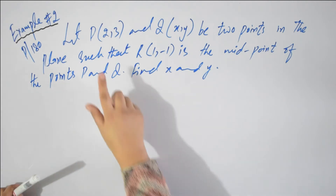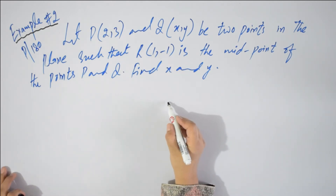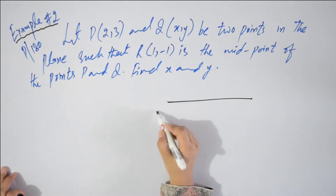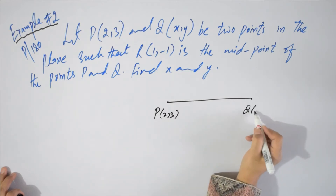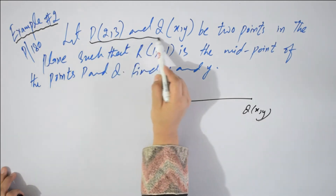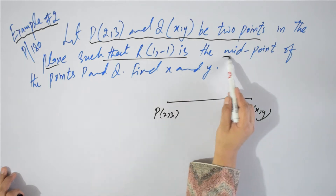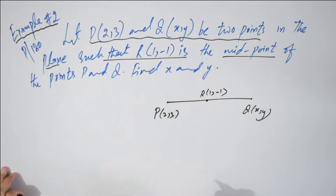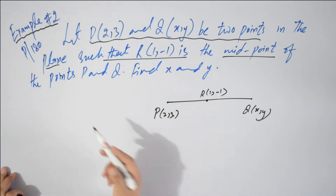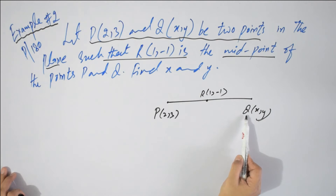In this question they said that P and Q are two points in a plane. Coordinates of P are 2 and 3, and coordinates of Q are x comma y. P and Q be two points in the plane such that R of 1 comma minus 1 is the midpoint. So midpoint of this line segment is R, and coordinates of R are 1 and minus 1. Find x and y — the required coordinates of Q, or find the other end point Q.